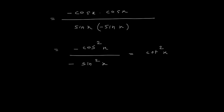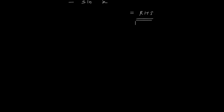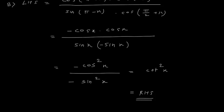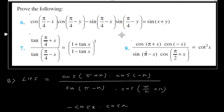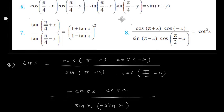Minus cos square x upon minus sin square x is cot square x, which is your right hand side. So LHS is equal to RHS. Eighth problem is done.